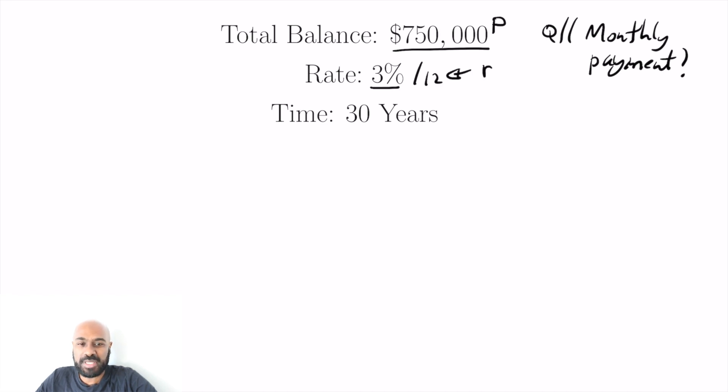So the balance is P, the principal, and the rate is 3% annually. So divide by 12, we'll get the monthly rate. I'll call that R. And there's a 30 year mortgage, it's compounded monthly. So that means that we have a 360 month term.